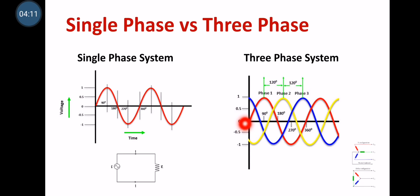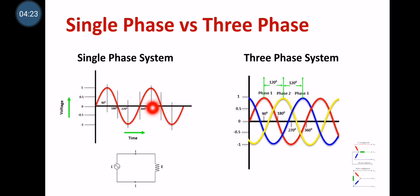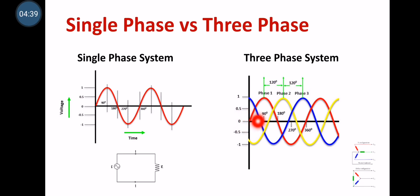Now I will show you the difference of single-phase system and three-phase system with the help of some diagrams. As you can see, this is a waveform of single-phase system — it has a positive half cycle and a negative half cycle. Only this single sinusoidal waveform represents single-phase system. But a combination of three sinusoidal waveforms represents three-phase system, all having a phase shift of 120 degrees — R, Y, B — represented by red, yellow, and blue conductors for understanding purposes. Thank you.